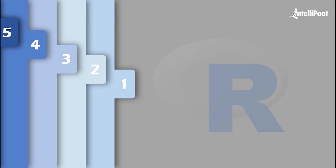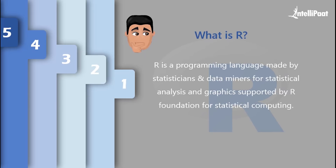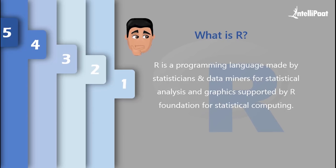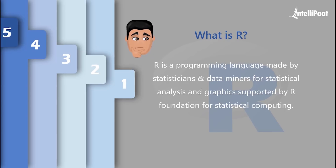Starting off with basic definitions — R is a programming language made by statisticians and data miners for statistical analysis and graphics, supported by the R Foundation for Statistical Computing. R also provides high-quality graphics and has some popular libraries which help in analytical parts, such as R Markdown and Shiny.